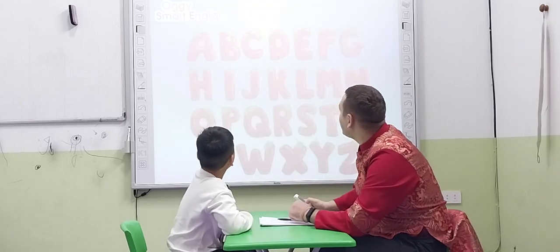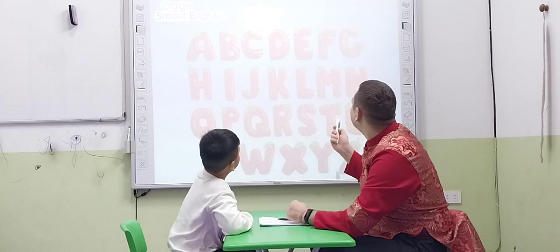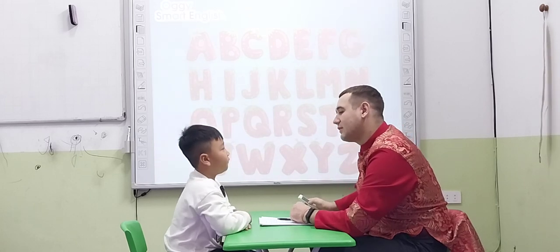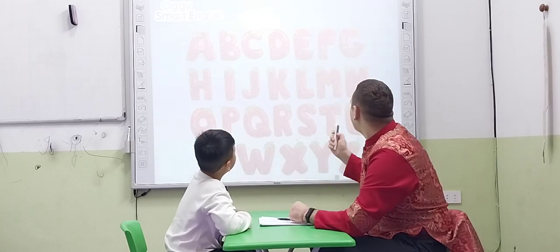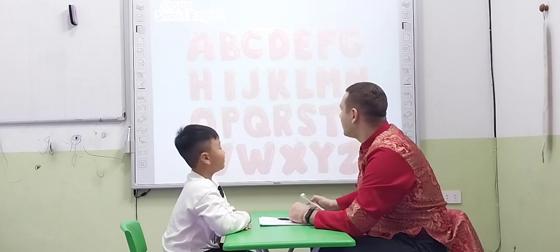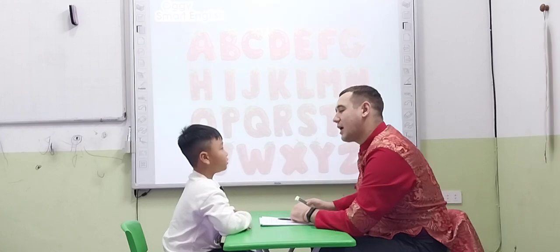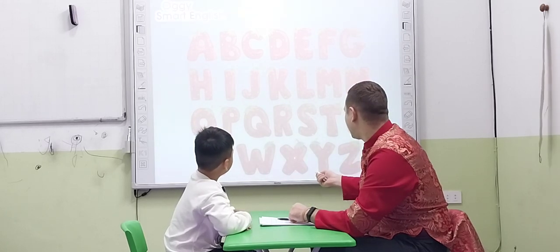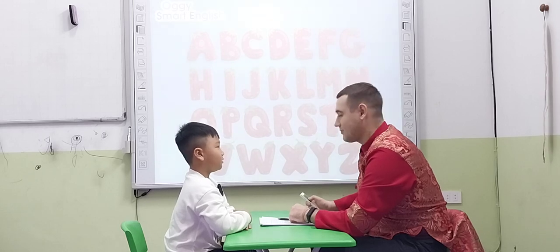All right, let's start with ABC. Tell me please, what letter is this? M. Sound? Very nice. What letter is this? K. Sound? K. Okay, what letter is this? O. And the sound? O. All right, and what about this letter? S. Sound? K.